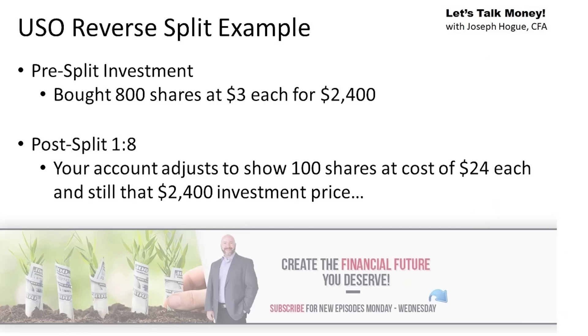So then what happens to my investment after a reverse split? If shares of USO jump eightfold, that must be a good thing, right? Well, not exactly. The shares in your investing account also did that reverse split. So if previously you owned 800 shares of USO before that 1-for-8 reverse stock split, you now only own 100 shares. And those other measures like the price you paid per share is going to change as well. So if you originally paid $3 per share for 800 shares — a $2,400 total investment — you still would have paid $2,400 for that investment. The only difference is now your account says you paid $24 for those 100 shares. So you see, nothing has really changed except on paper.